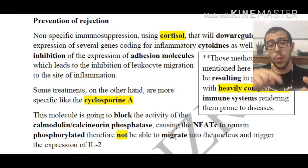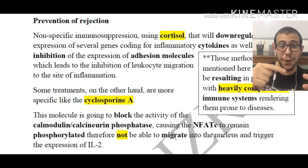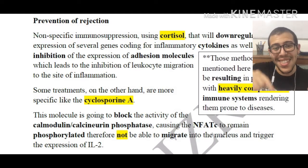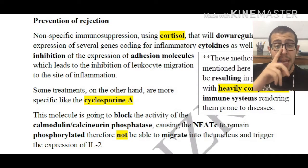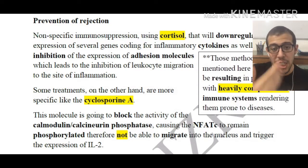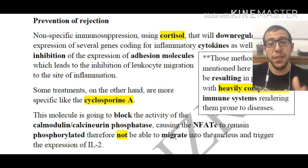When the phosphate is removed from NFAT, this transcription factor — which is a protein — can migrate into the nucleus, binding to the gene of interest. This triggers the expression of that gene, which specifically gives us interleukin-2.